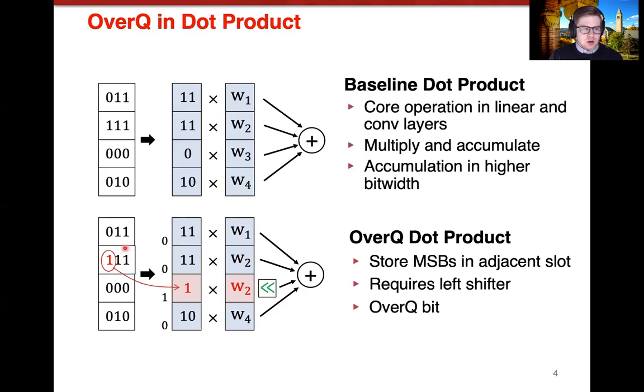With the overQ version of the dot product, the previous layer still accumulates in a higher bit width, but now we could handle that higher bit width by overwriting values that are small relative to the outliers. In this case, this value is an outlier, and since there is a zero in this slot here, it is small enough to be overwritten. When these are multiplied together, this requires a left shift operation before accumulation. We also store a column of bits to represent which of these values are being overwritten, and we call this the overQ bit.